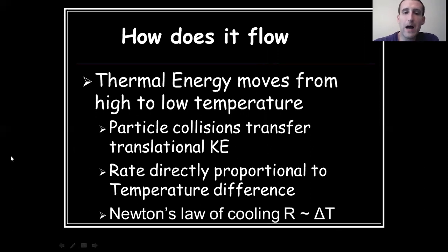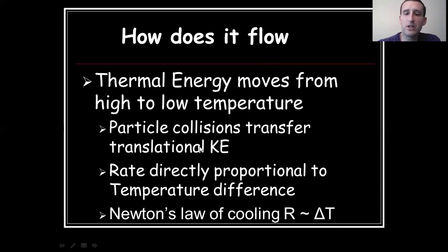Thermal energy flows from hot to cold — from high temperature to low temperature — because of the collisions and the transfer of momentum. The momentum is conserved, and translational kinetic energy is also transferred because it depends on mass and velocity. How quickly the energy is transferred has everything to do with how large the temperature difference is.